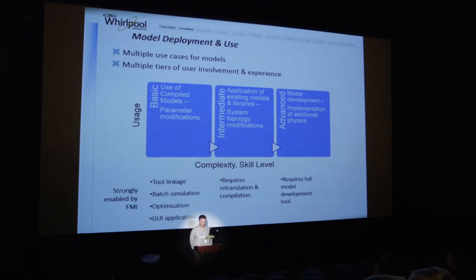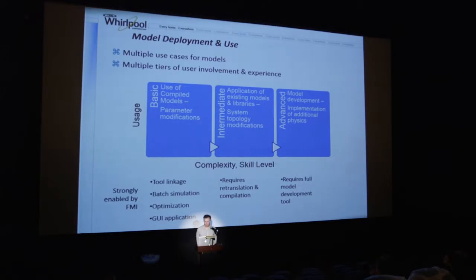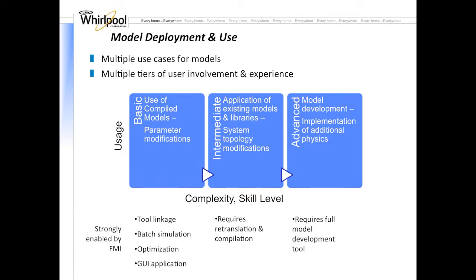In terms of the use case for models, there are a few different tiers of users. Modelica model developers are in the advanced model development category, working on developing models and libraries to implement different physics. Intermediate users may be trained in Modelica and able to interchange components and look at different system topologies, but are probably not implementing new models or physics. The basic user is where we're trying to grow model use — someone who wants to answer an engineering question simply and quickly, without needing to know Modelica. This basic use case, strongly enabled by FMI, is what I'll focus on today.